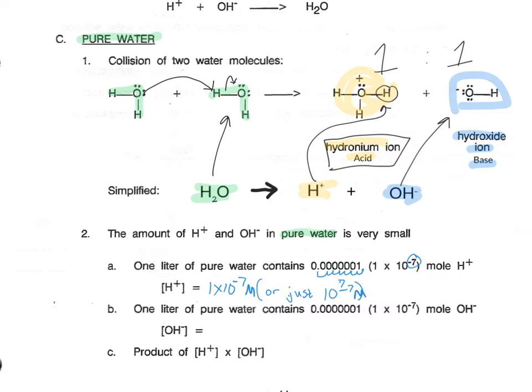Since we know the hydronium ion, and we know that every time water breaks, it makes 1 hydronium and 1 hydroxide in a 1 to 1 ratio, we know that 1 in every 10 million waters breaks into hydrogen and hydroxide. That is written as 1 times 10 to the negative 7, and our molarity of hydroxide is 10 to the negative 7.